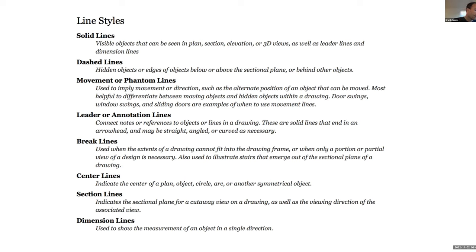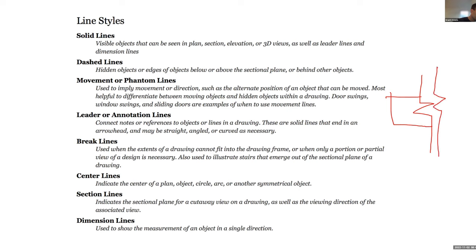Break lines are those little lines — you've probably seen them before — indicating that something continues. If a drawing stops at the break line, the presumption is that it continues. If you have two break lines together, that's telling you a section in the middle has been removed and the drawing has been condensed. Center lines indicate the center of something — usually a little hash mark.